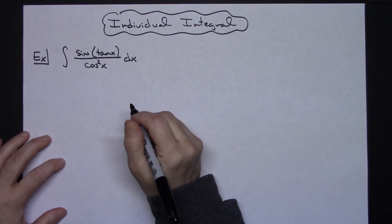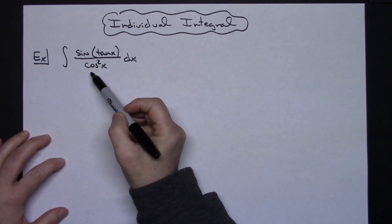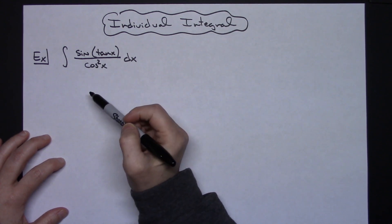In this video, I'm going to work out an individual integral problem. We're going to take a look at the integral of sine tangent x all over cosine squared x dx.